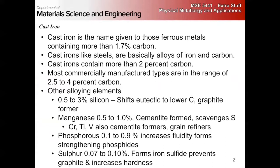Cast iron: ferrous metals that contain more than 1.7% carbon. Like steels, alloys of iron and carbon — and I know that contradicts the definition I gave for steel. Steel doesn't necessarily have to have carbon, like IF steel. Most of the commercially manufactured types are going to be in the range of 2.5% to 4%, but there are a bunch of other useful alloying elements in there.